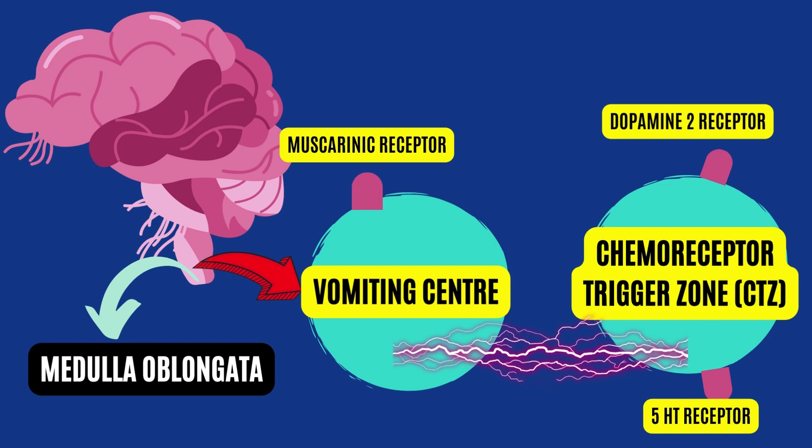An important point to remember is that the CTZ lies outside the blood-brain barrier, or the BBB. The BBB regulates chemicals that have an impact on the brain. When the BBB is present, drugs and substances in the blood have selective access to the brain. Since the CTZ lies outside the BBB, drugs and medications are capable of stimulating this area to trigger vomiting.